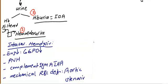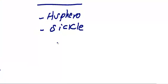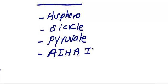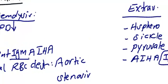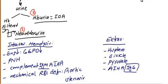For extravascular hemolysis, the problem is outside the vessels — in the liver or spleen — where macrophages play an important role. Examples include hereditary spherocytosis, sickle cell disease, pyruvate kinase deficiency, and IgG-type autoimmune hemolytic anemia. Note that IgG autoimmune hemolytic anemia is antibody-mediated and causes extravascular hemolysis, while IgM type is complement-mediated and causes intravascular hemolysis.